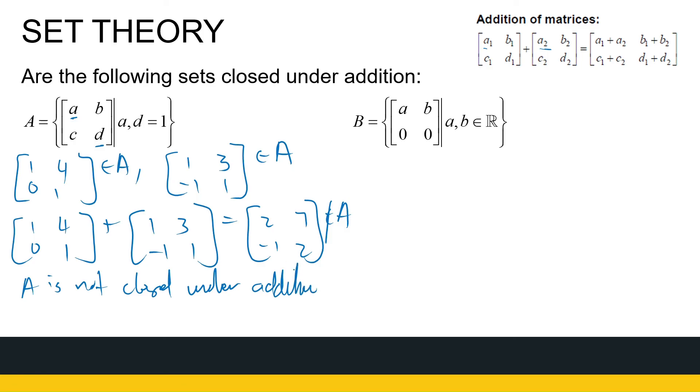And our last example, B, if I've got a matrix where the bottom row, the second row is filled with zeros, that one is going to be closed under addition. So if I say, let [a1, b1; 0, 0] and [a2, b2; 0, 0], let both of them be elements of B.